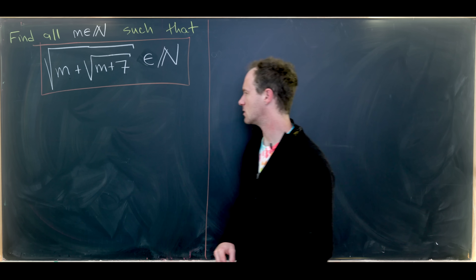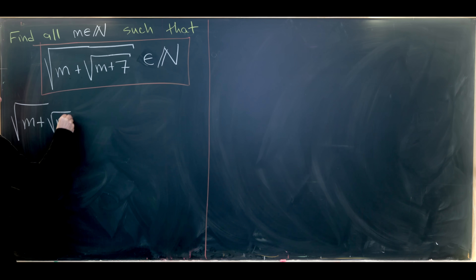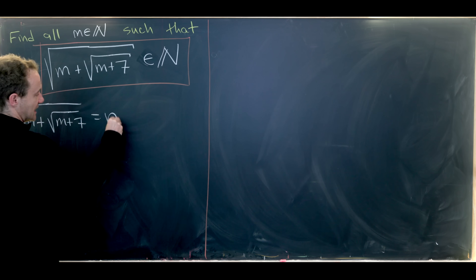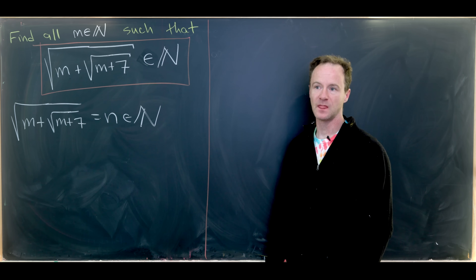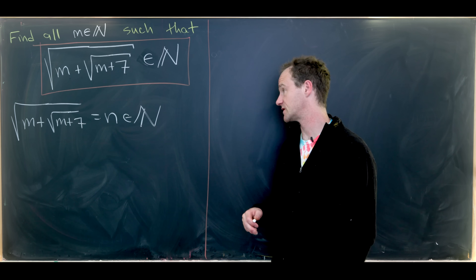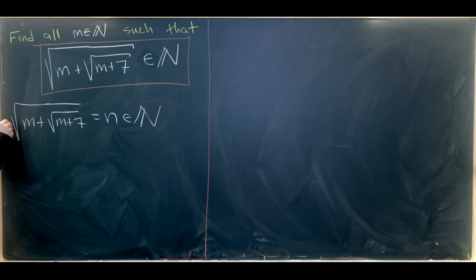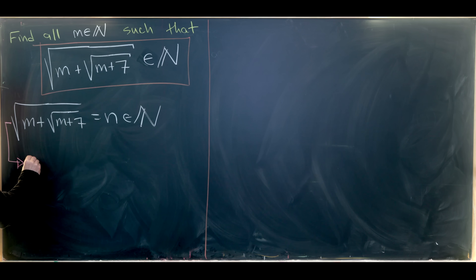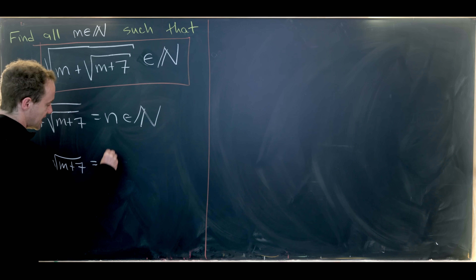So let's see how this can go. We're going to start with the basic way of rewriting this. We'll rewrite this as the square root of m plus the square root of m plus 7 equals n. That little n is the natural number that this expression is equal to. Now we'll use the fact that it's easier to work with squares than with square roots to get rid of these square roots by squaring both sides. That'll leave us with m plus the square root of m plus 7 equals n squared.